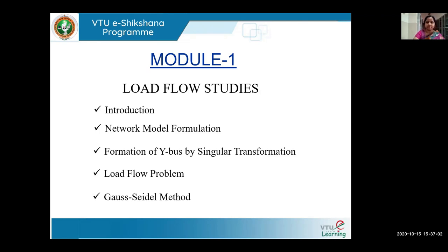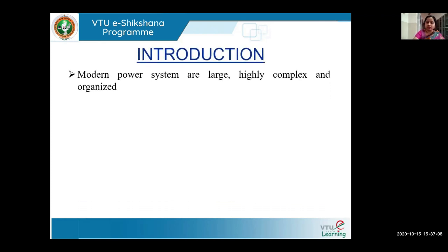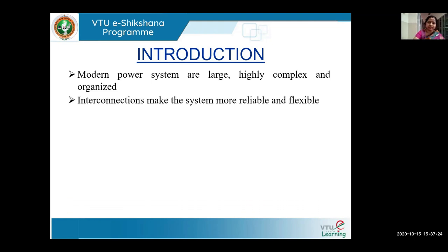Our modern power system is large, highly complex, and organized in the form of regional grids, which are interconnected to facilitate power transfer in various areas via tie lines. These interconnections make the system reliable and flexible. For example, if power demand increases in a certain area, we can easily borrow from neighboring areas. This interconnection also helps in reducing the reserve capacity in each area.